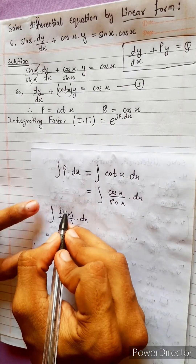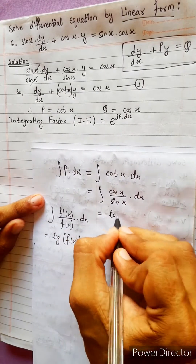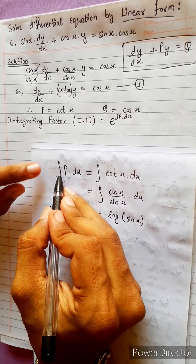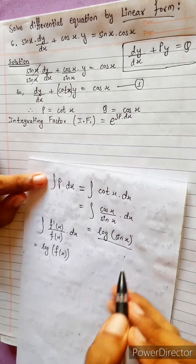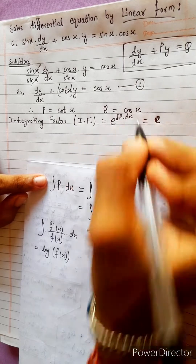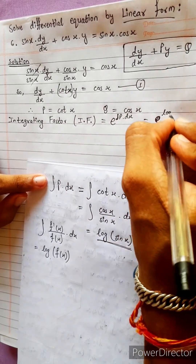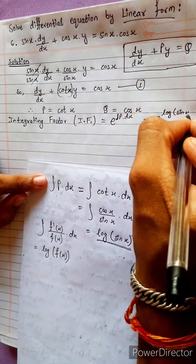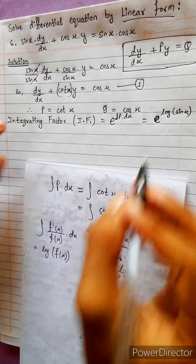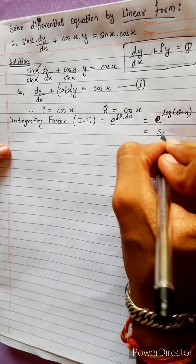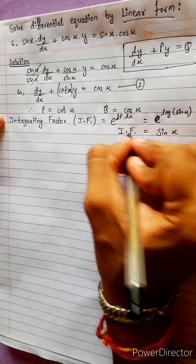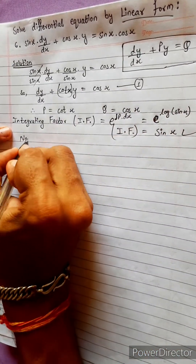The derivative of sin x is cos x. Integration of cot x equals log sin x. So ∫p dx equals log sin x. Exponential of log sin x — since exponential and log are inverse to each other, they cancel — equals sin x. So the integrating factor is sin x.